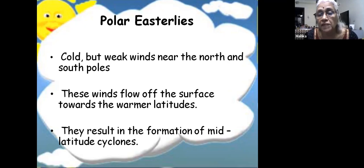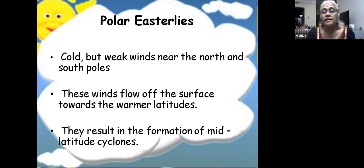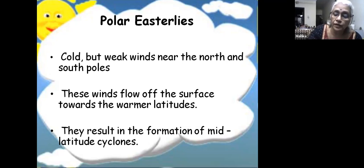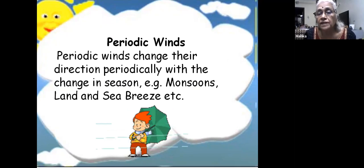Polar easterlies flow off the surface toward warmer latitudes, decreasing the temperature of those places. More importantly, they create mid-latitude cyclones when they meet the warm winds coming from the subtropical high pressure and form a front. These cyclones come mainly just after summer - similar to how in India cyclones develop just after the monsoon season, in October and November toward winter.